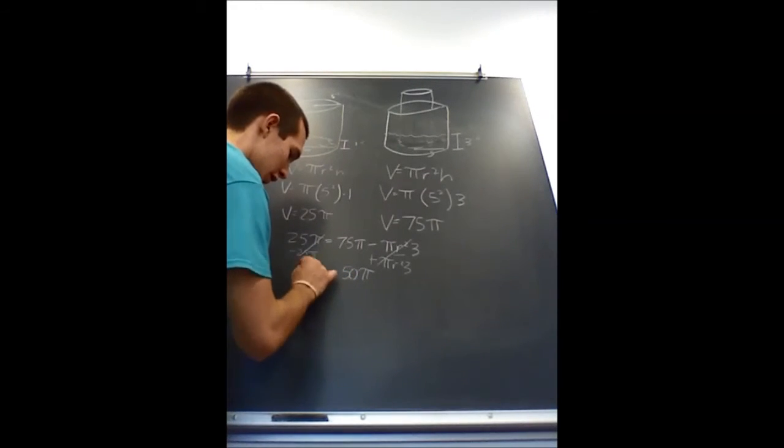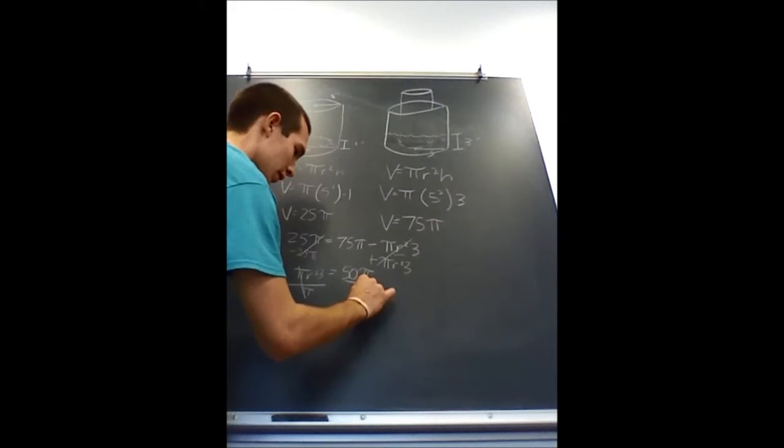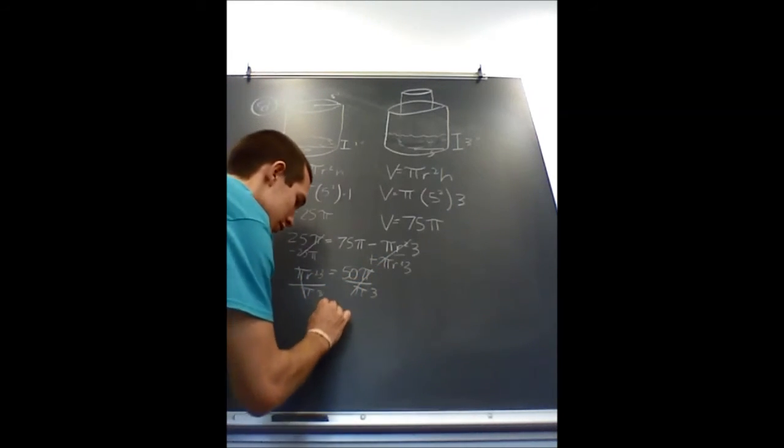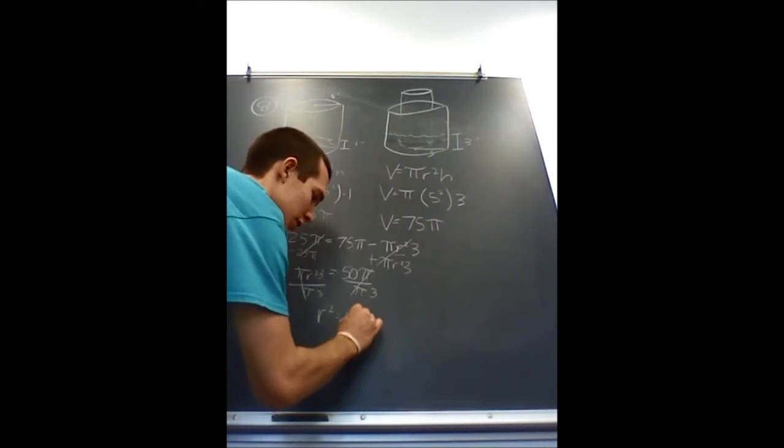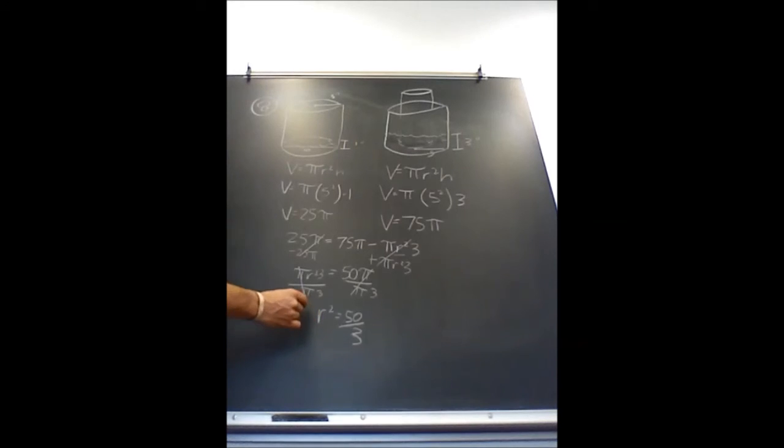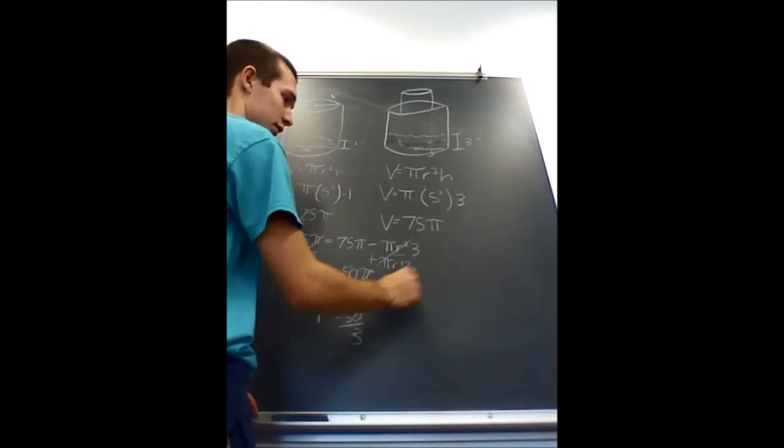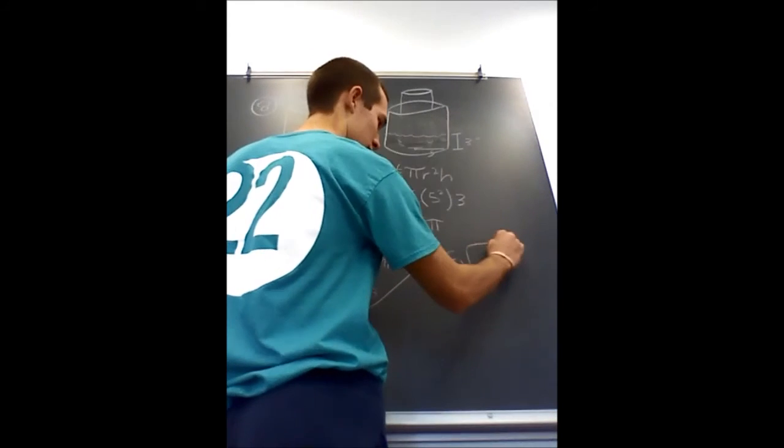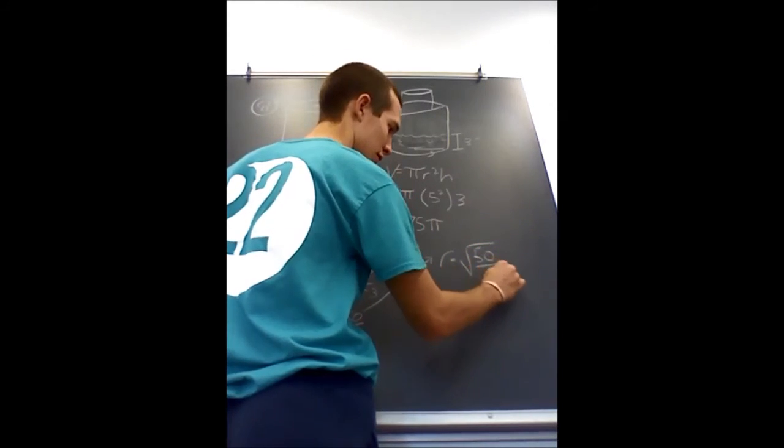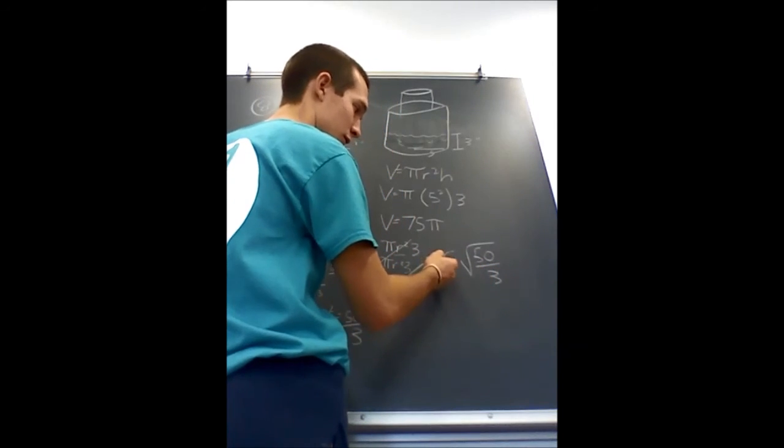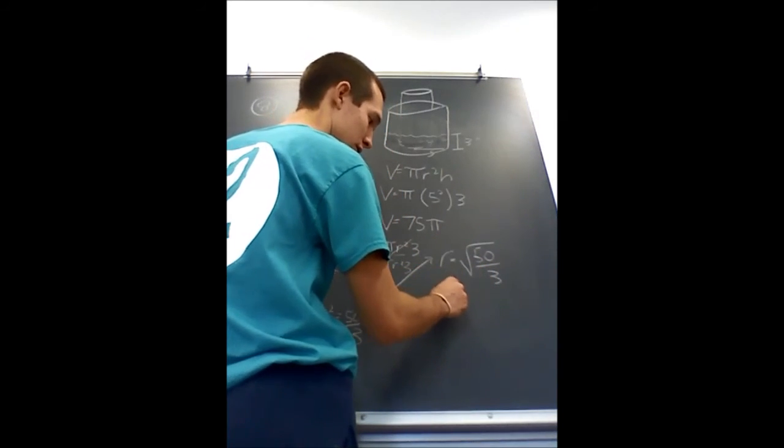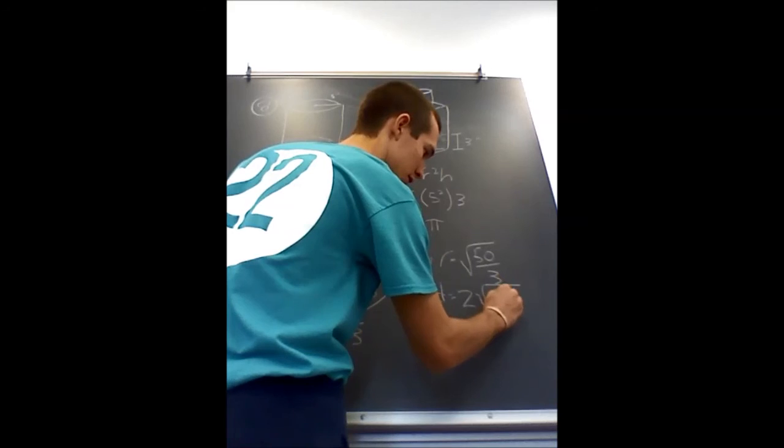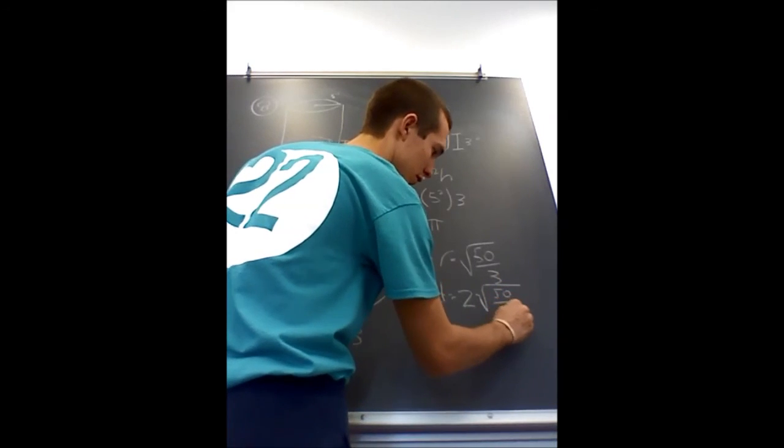Then you can divide by pi and divide by 3. And you get r squared is equal to 50 over 3, which means that the radius is equal to the square root of 50 over 3. Or the diameter, which is twice the radius, would be equal to 2 times by the square root of 50 over 3.